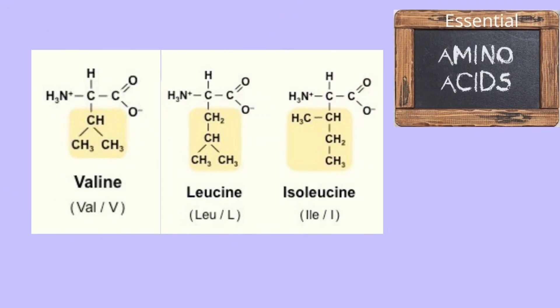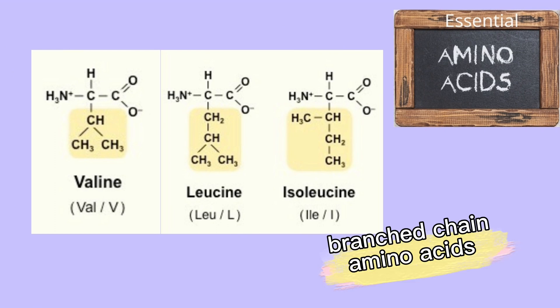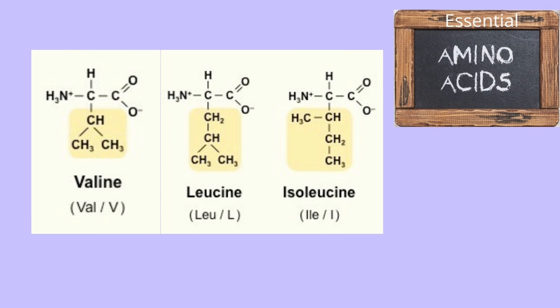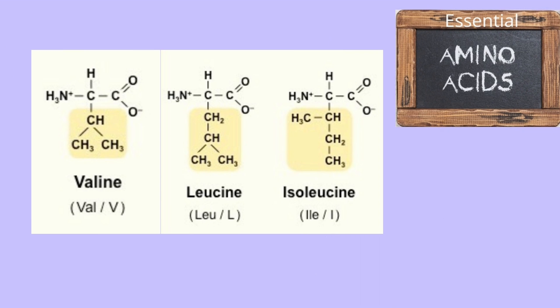Valine, leucine, and isoleucine are branched-chain amino acids. They are plentiful in muscle proteins, stimulate muscle growth in the body, and provide energy during exercise.